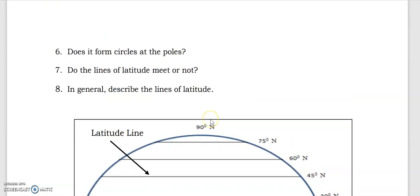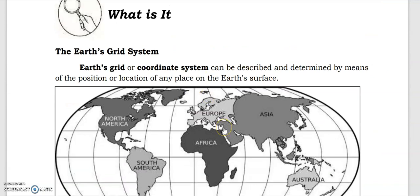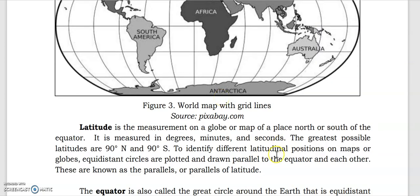For the What Is It section: Earth's grid or coordinate system can be described and determined by means of the position or location of any place on Earth's surface. Latitude is the measurement on the global map of a place north or south of the equator, and it is measured in degrees. The greatest possible latitudes are 90 degrees north and 90 degrees south. Always remember that latitudes are parallel — when we say parallel, they do not meet each other.